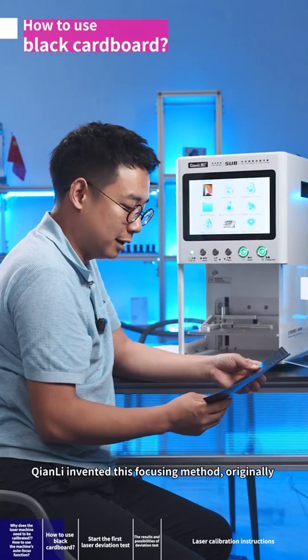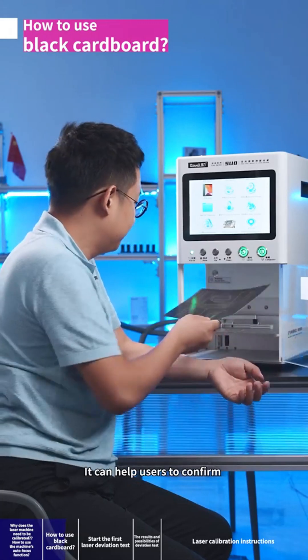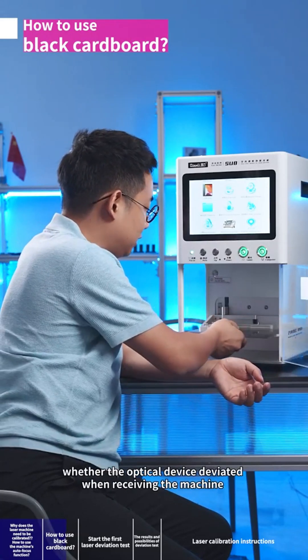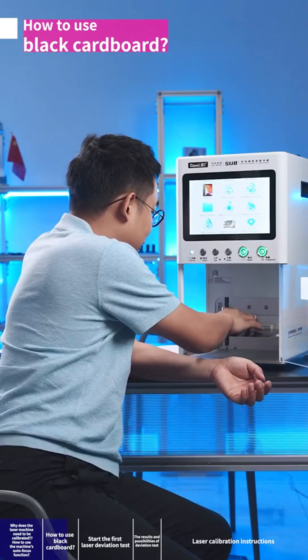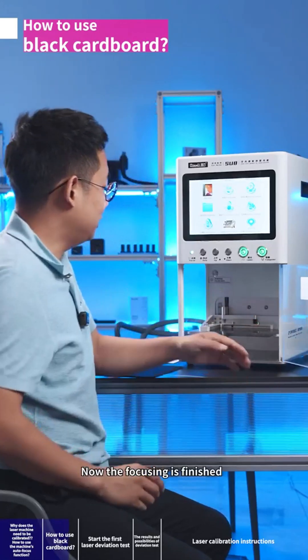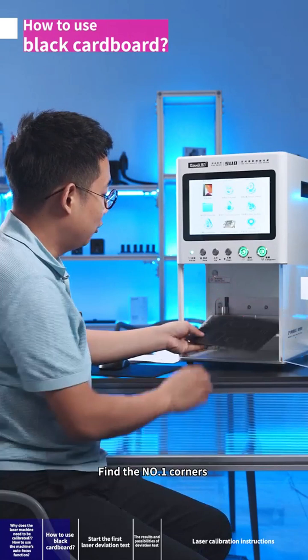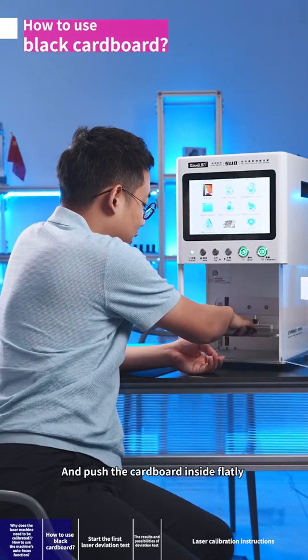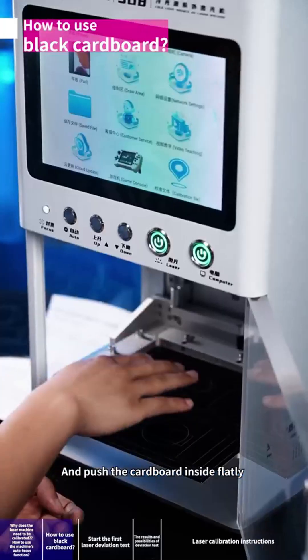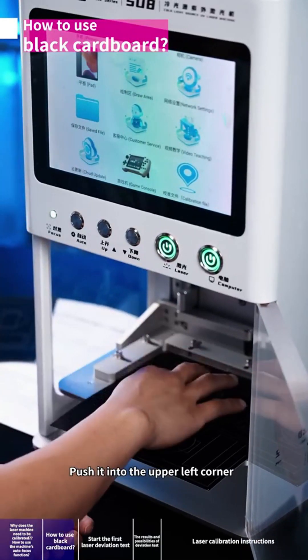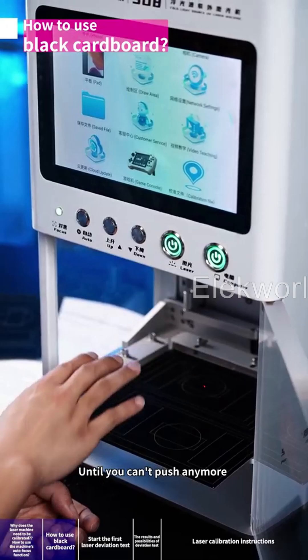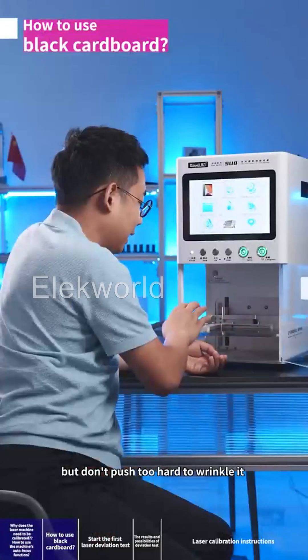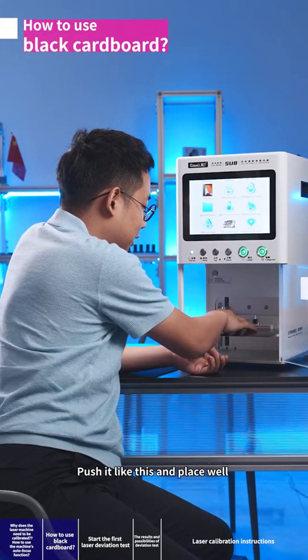Tian Li invented this focusing method originally. It can help users confirm whether the optical device deviated when receiving the machine. Now the focusing is finished. Find the number one corners, align them, and push the cardboard inside flatly into the upper left corner until you can't push anymore. But don't push too hard to wrinkle it.